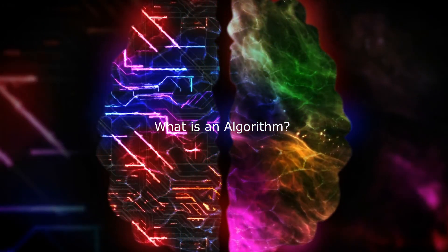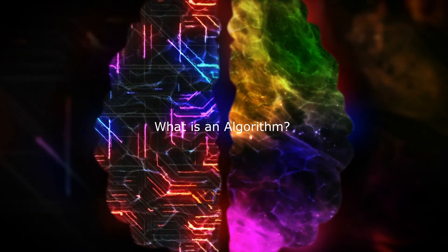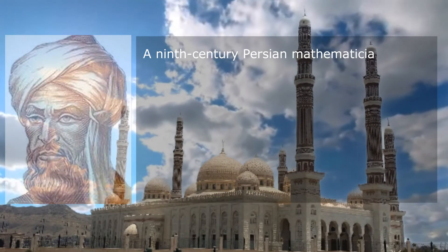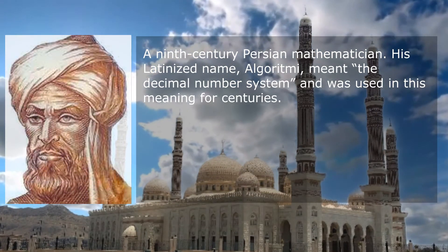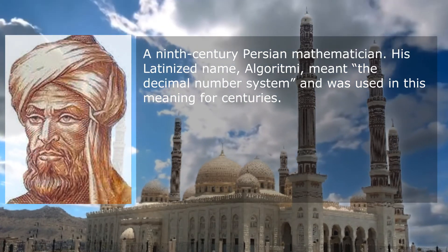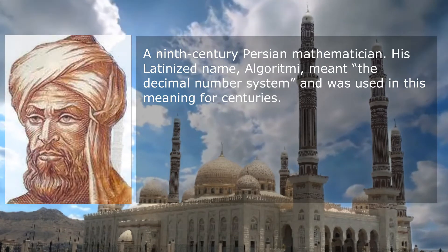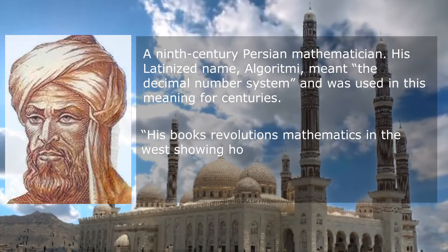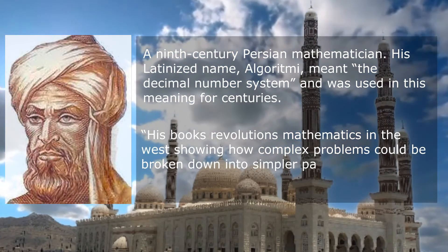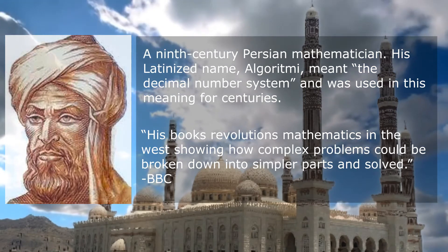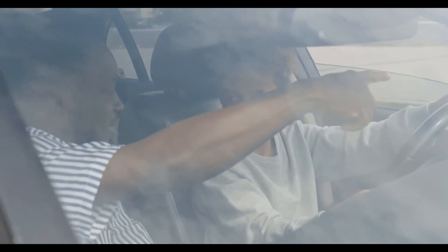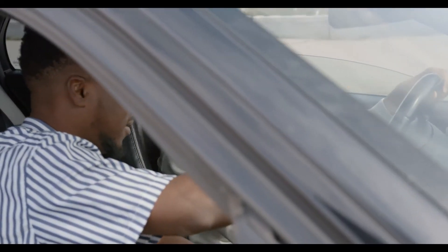The term algorithm derives from the name of Muhammad ibn Musa al-Khwarizmi. In the very simplest meaning, an algorithm is a step-by-step set of instructions.